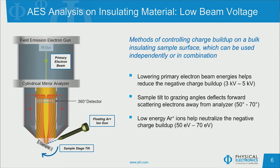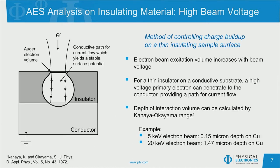A few examples of methods used to handle charge compensation for insulating samples in Auger analysis are shown here using low beam voltage techniques. One way to reduce the negative charge buildup is to use a lower primary electron beam on the order of 3 to 5 kilovolts. Another approach is to tilt the sample to grazing angles to deflect the forward scattering electrons away from the analyzer. We can also use a low energy argon ion flood to help neutralize the negative surface charge. Another technique uses high electron beam voltages: if we have a thin insulating layer on top of a conductive substrate, we can use a high electron beam energy to punch through the insulator to form a conductive path. The depth of the interaction volume can be calculated from the Kanaya-Okayama range equation.